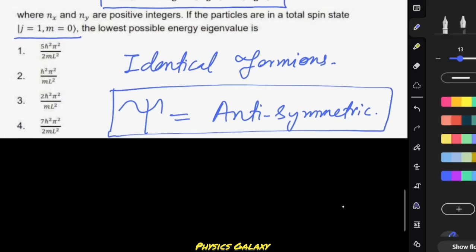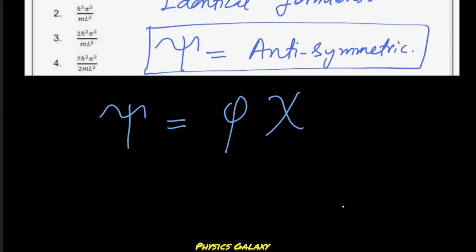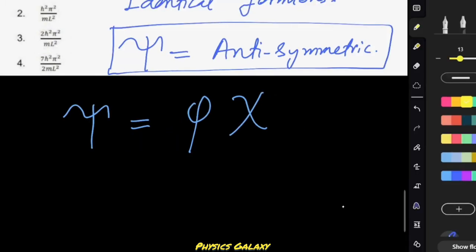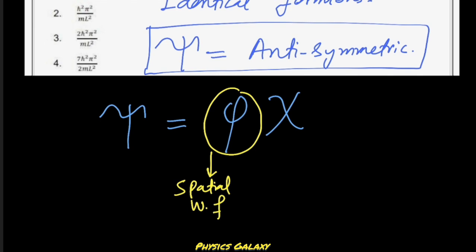We can break down our Psi in terms of the spatial wave function phi and the spin wave function chi. So phi is your spatial wave function and chi is your spin wave function.